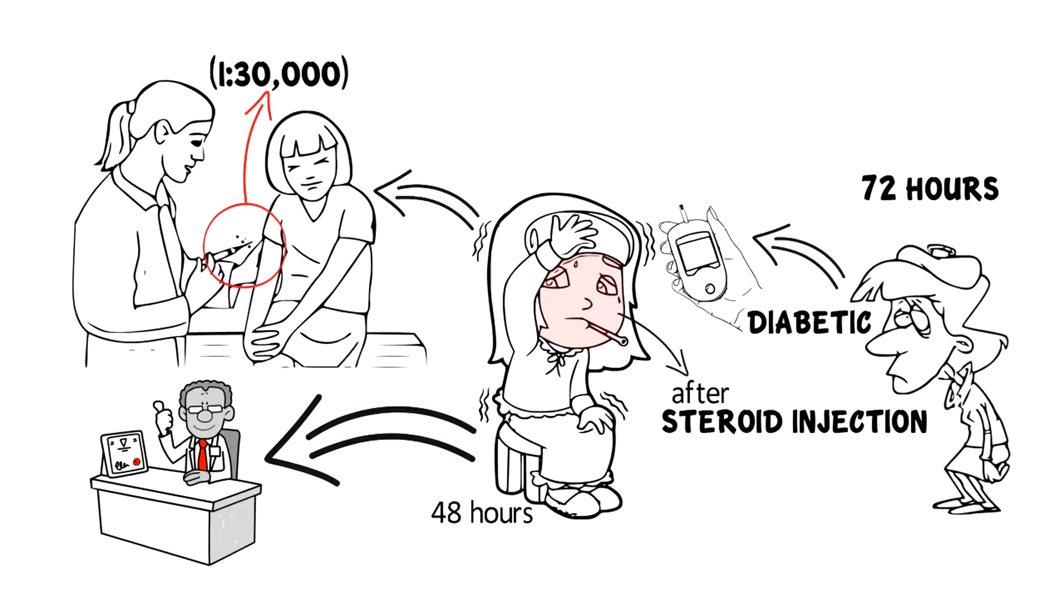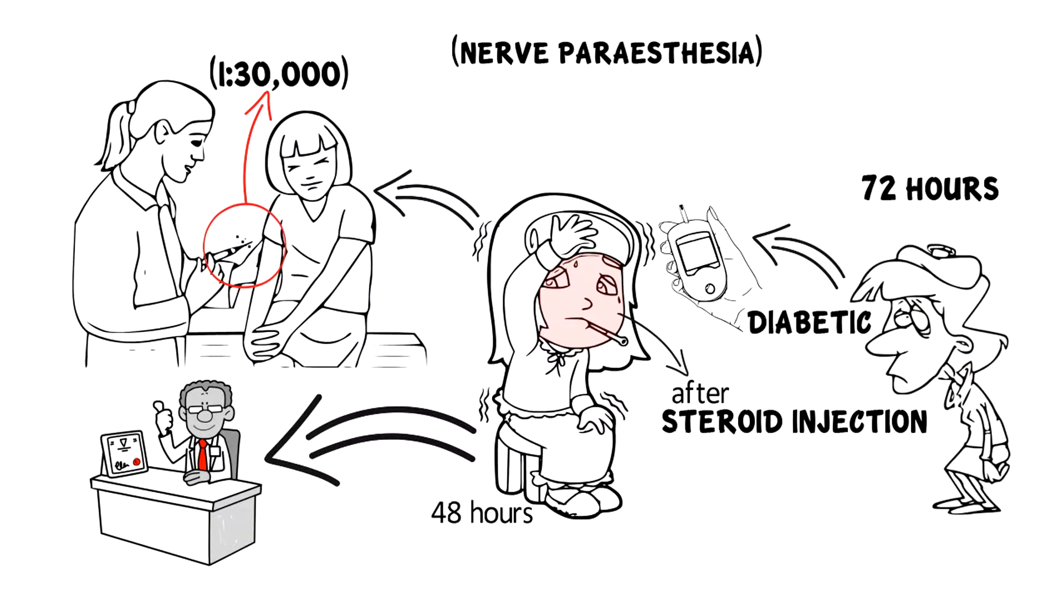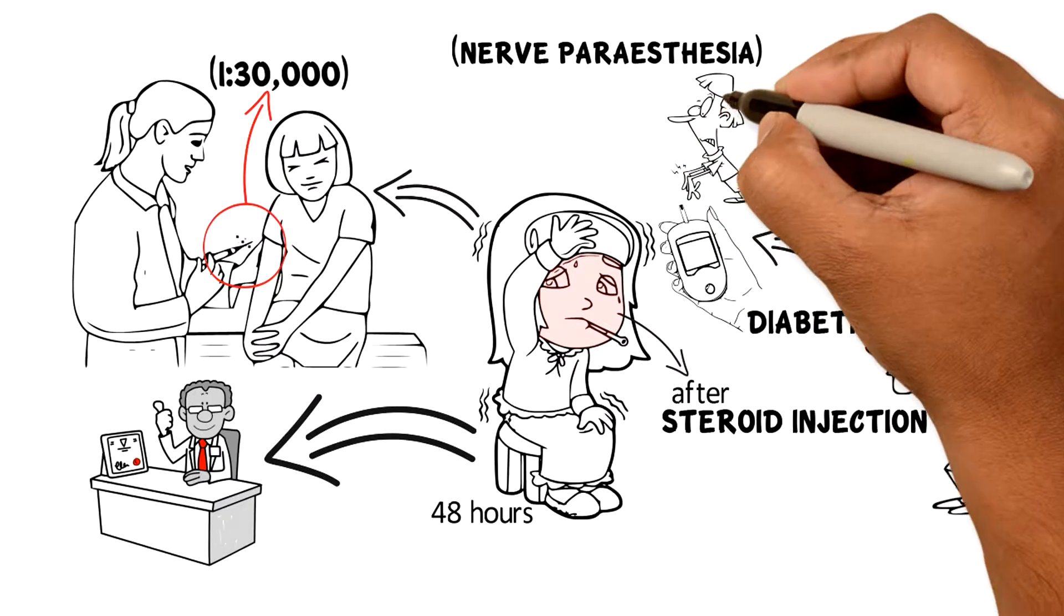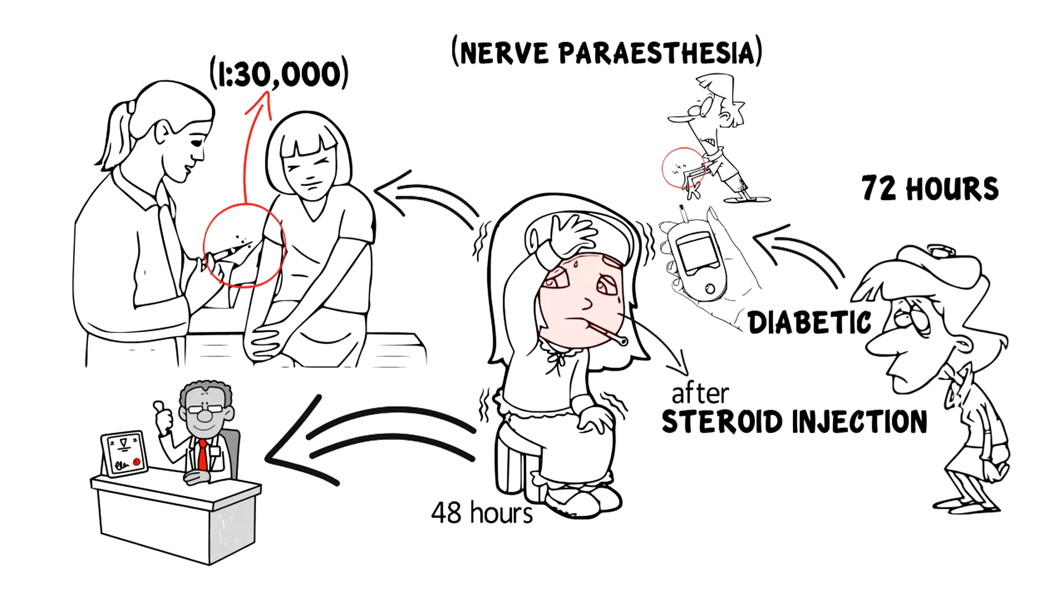Injections can sometimes cause temporary numbness or weakness. This happens due to the local anesthetic spreading around nearby nerves. This is temporary, but if you feel any numbness or muscle weakness after your injection, you should tell your doctor.